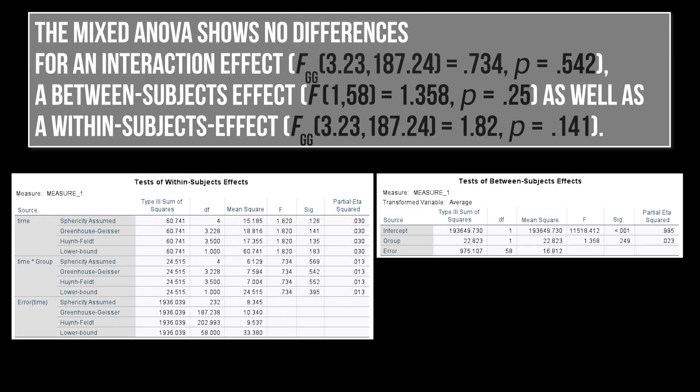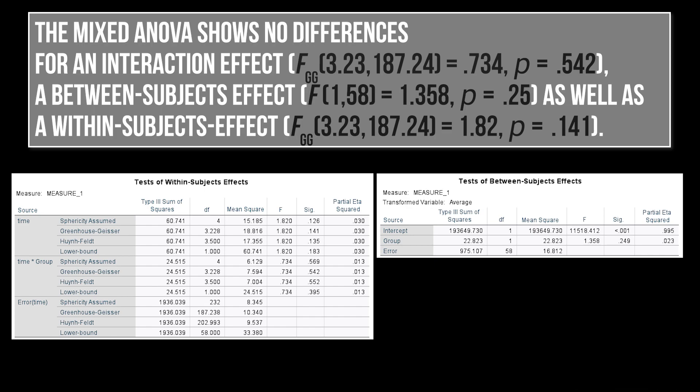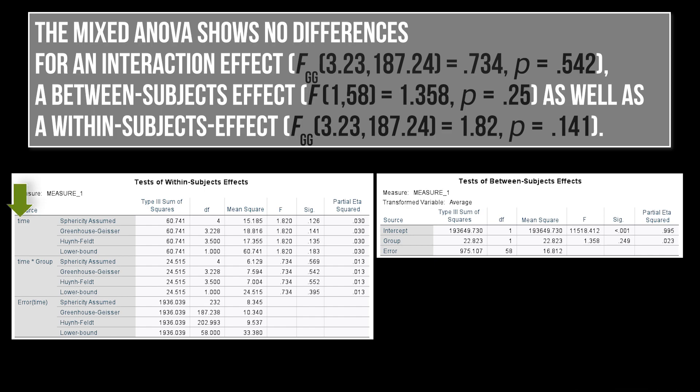The results of the mixed ANOVA itself are reported. You start with the results corrected for the violation of sphericity, which I have explained in detail in the corresponding video. However, this correction is only required for the within subjects effect and the interaction effect. The test statistic is given together with the degrees of freedom and the p-value.